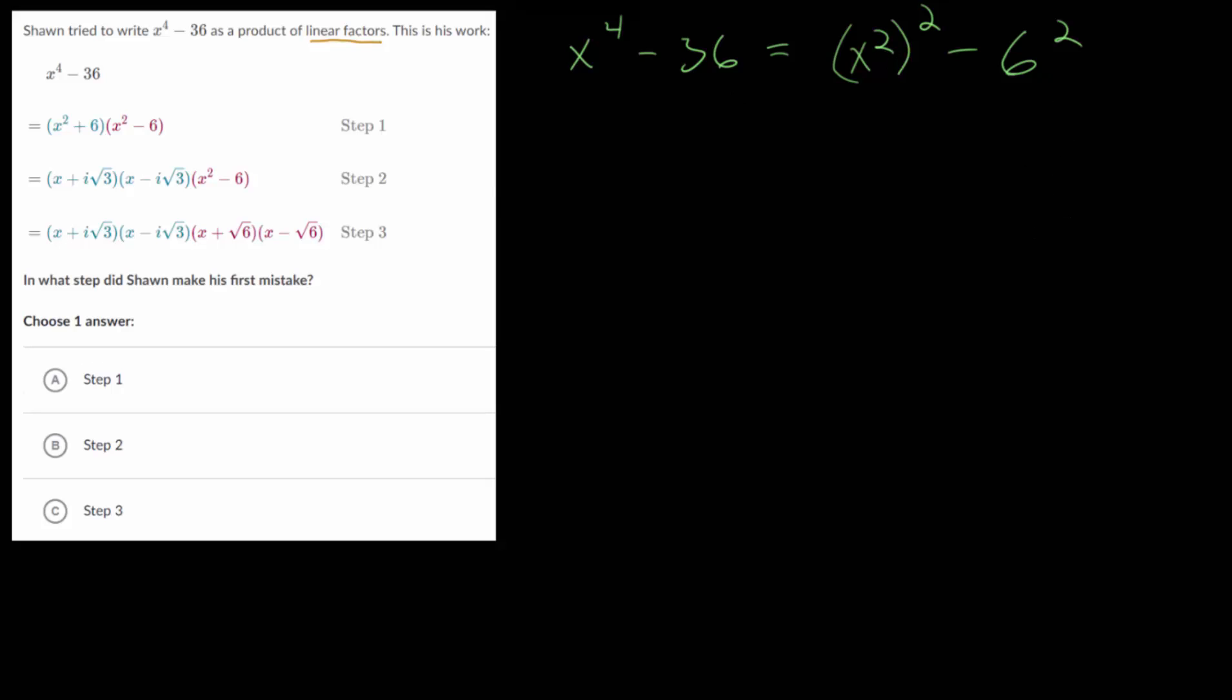And remember the formula for a difference of squares: we have a squared minus b squared, this is equal to the product of two binomials where we have the first one minus the second one, ignoring the squares, and we will multiply that by the first one plus the second one.